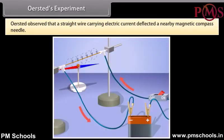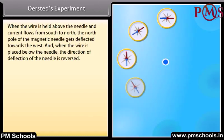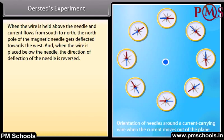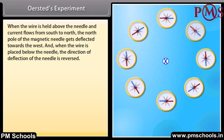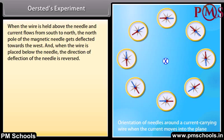Oersted's experiment: Oersted observed that a straight wire carrying electric current deflected a nearby magnetic compass needle. When the wire is held above the needle and the current flows from south to north, the north pole of the magnetic needle gets deflected towards the west. When the wire is placed below the needle, the direction of deflection of the needle is reversed.